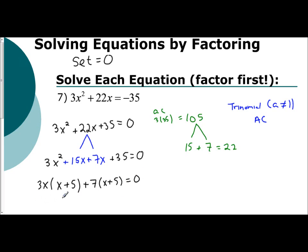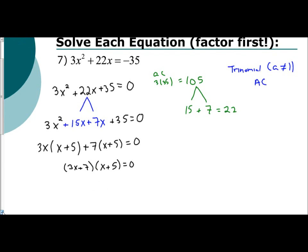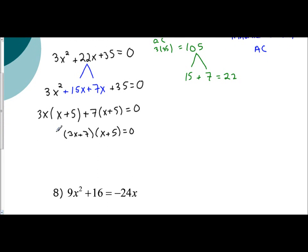So now to complete the factoring by grouping technique, they both have an x plus 5 in common, so I'm going to factor that out. And I'm left with a 3x plus 7. And so those are my two factors. So this is my factored form.